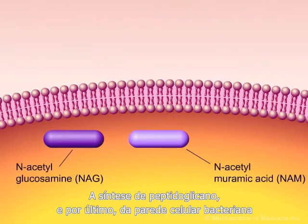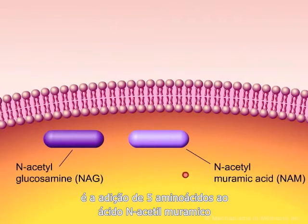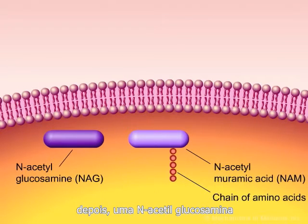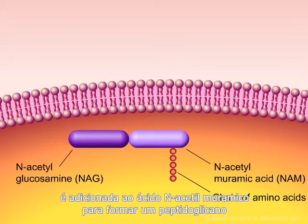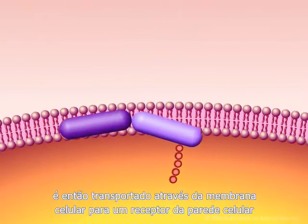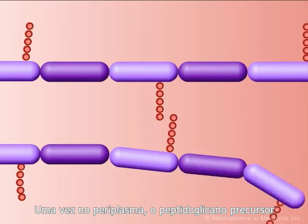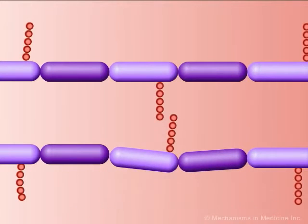Synthesis of the peptidoglycan and ultimately the bacterial cell wall occurs in a number of stages. One of the first stages is the addition of five amino acids to N-acetylmuramic acid. Next, N-acetylglucosamine is added to the N-acetylmuramic acid to form a precursor of peptidoglycan. This peptidoglycan precursor is then transported across the cell membrane to a cell wall acceptor in the periplasm.